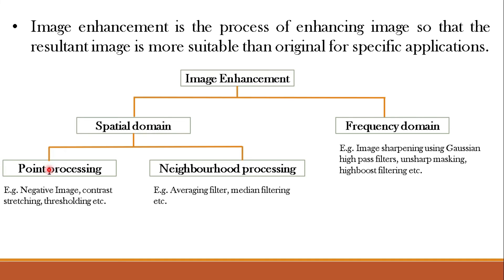Spatial domain techniques can be further classified into point processing and neighborhood processing. Point processing means we process the image pixel by pixel for the whole image. Neighborhood processing uses a neighborhood of a pixel, for example a 3x3 neighborhood or filter mask. Examples of point processing include image negative, contrast stretching, and thresholding. Neighborhood processing involves averaging filter, median filtering, etc. Frequency domain examples include image sharpening using Gaussian high-pass filters, unsharp masking, and high boost filtering.